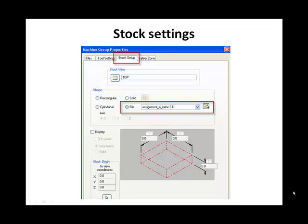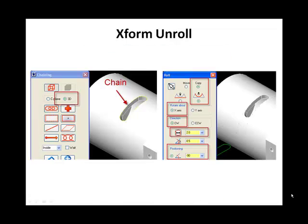Open the Level Manager and create a new level for the Axis Substitution geometry. Select Transform Roll.